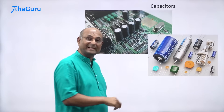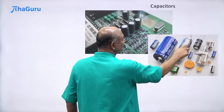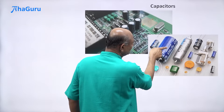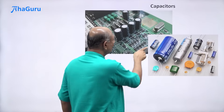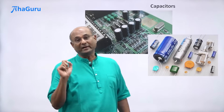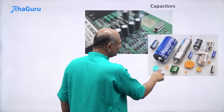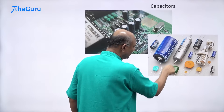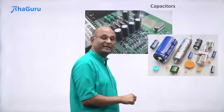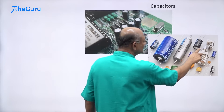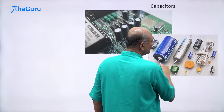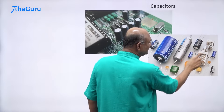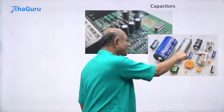Capacitors come in many different sizes and shapes. These are all cylindrical. This huge one says 4700 microfarad. This small one says 100 microfarad. You can see all these capacitors — they look like blobs with wires, whereas these look like cylinders. And this one looks a little weird. This has a knob you can turn that will change things. This is a variable capacitor.